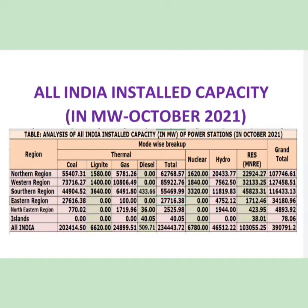If you look at that table, it shows the total installed capacity of India, presented at 390 gigawatt — 390.71 gigawatt — and out of that, if you look at the different regions, there are five main regions.